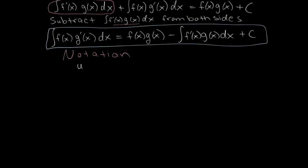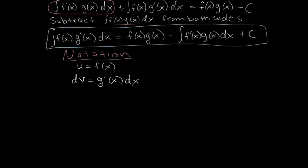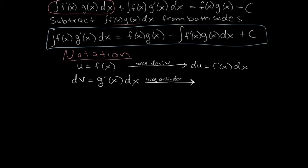Our notation is to set u equal to f of x and dv equal to the derivative of the g function times dx. A little note about u and v: depending on your handwriting they might look similar. Notice that every time I make a u, the u has a little tail on the bottom, but the v's have little tails on the top. So if u equals f of x, then du equals f prime times dx, and if dv equals g prime dx, then taking the antiderivative gives v equals g of x.